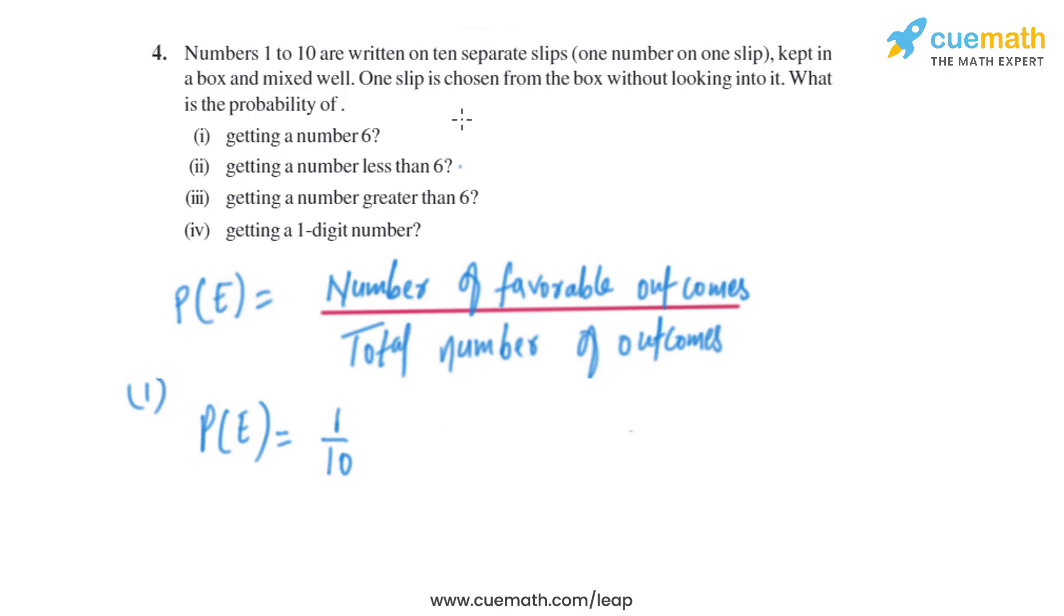Now let's have a look into the second part: getting a number less than 6. A number less than 6 are basically 1, 2, 3, 4, and 5. So there are 5 favorable outcomes divided by the total number of outcomes, that is 10. So it's basically 1 by 2.